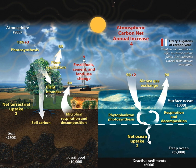Carbon is the main component of biological compounds as well as a major component of many minerals such as limestone. Along with the nitrogen cycle and the water cycle, the carbon cycle comprises a sequence of events that are key to make Earth capable of sustaining life. It describes the movement of carbon as it is recycled and reused throughout the biosphere, as well as long-term processes of carbon sequestration to and release from carbon sinks.